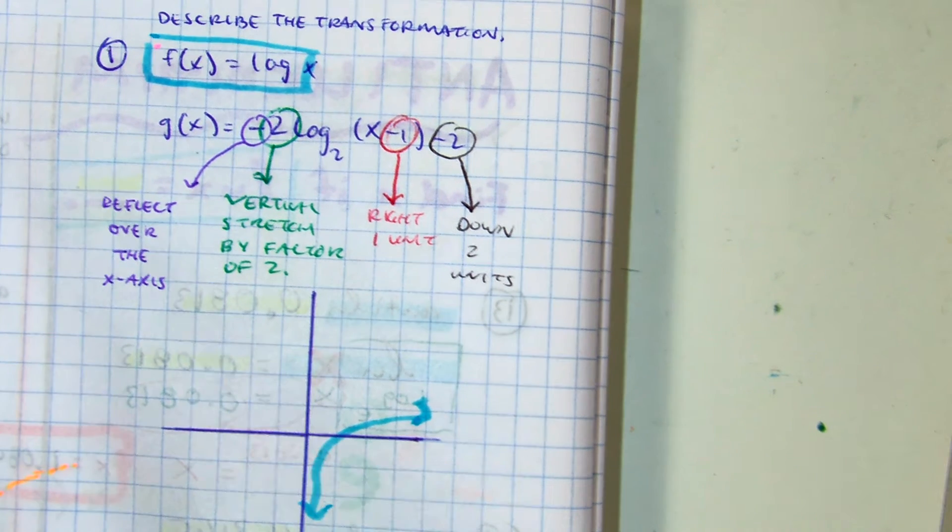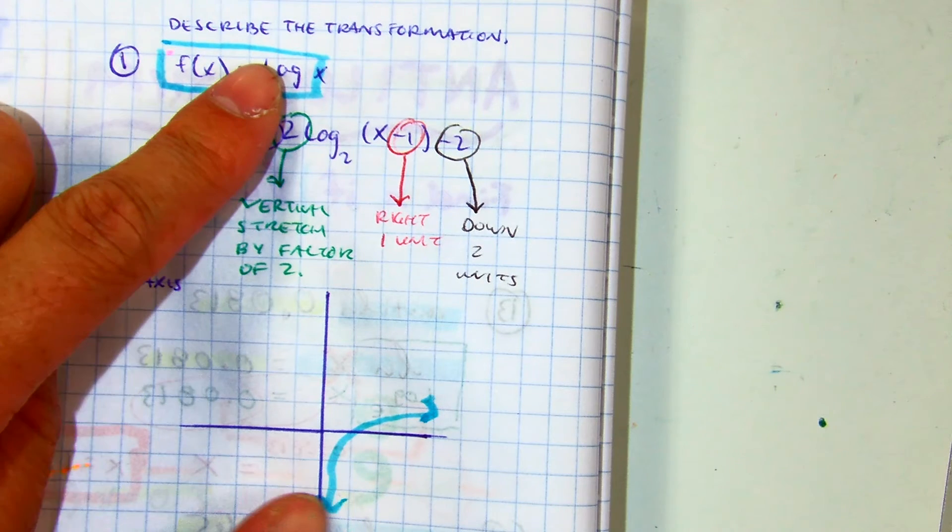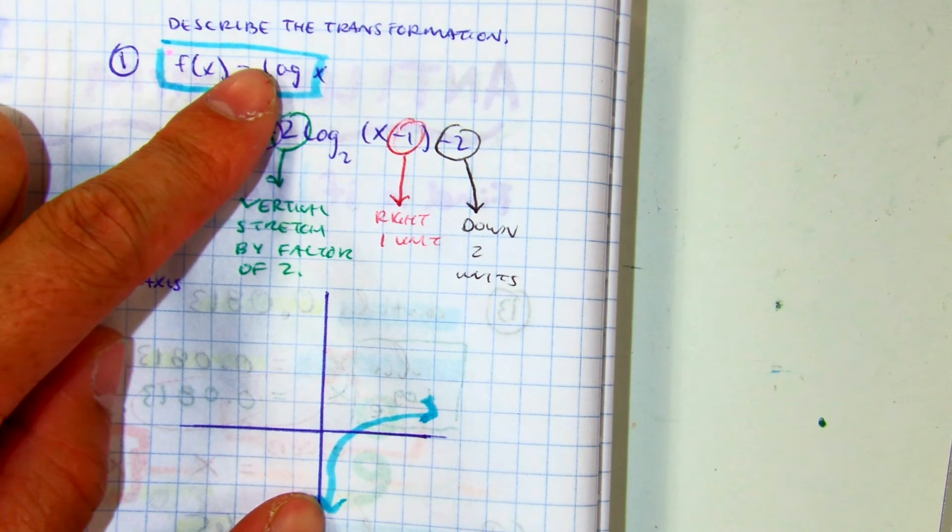Okay. So here is my parent graph, log of x. Continuous function. Increasing.